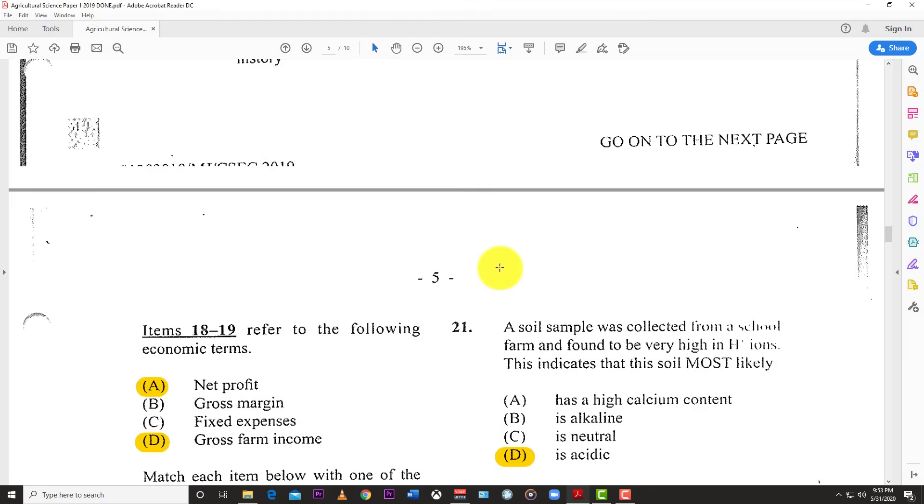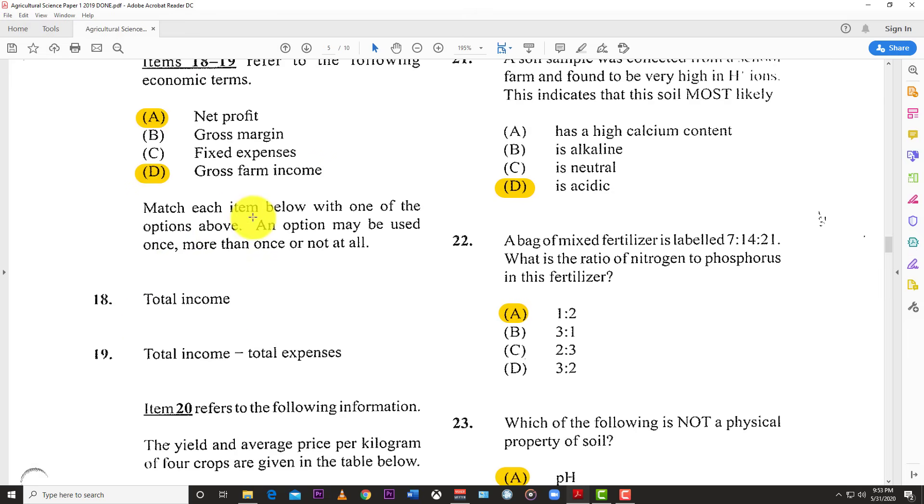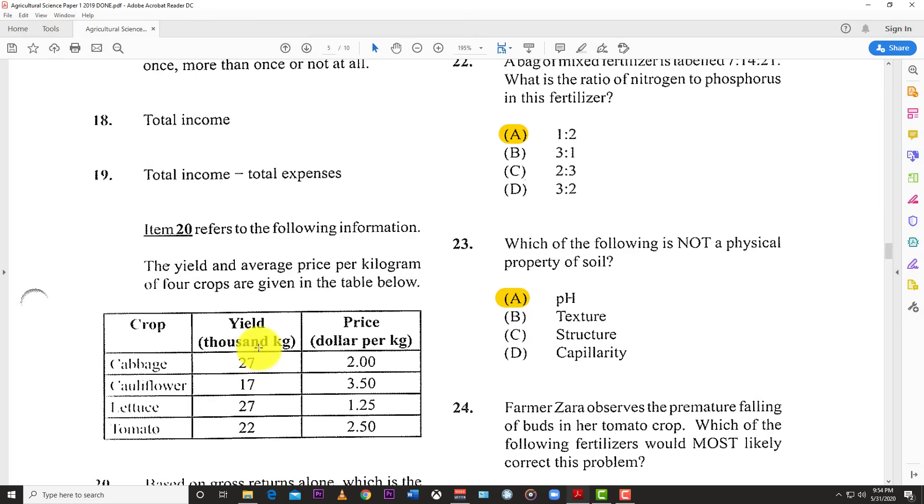Number 18-19: Match each economics term. Total income would be the same as your gross farm income. Total income minus total expenditure gives you net profit - how much you earn, how much you spend, and what remains.